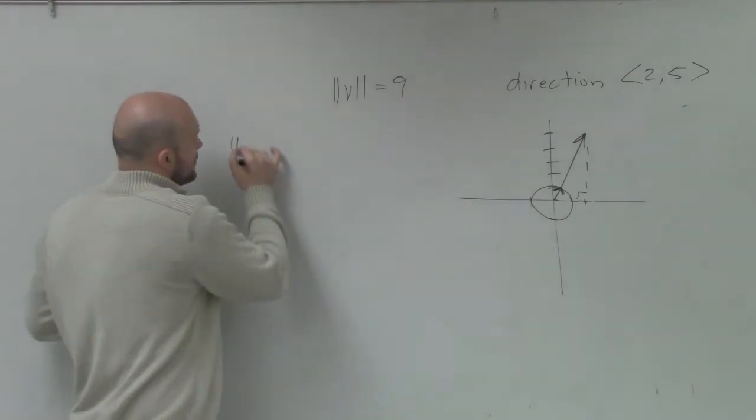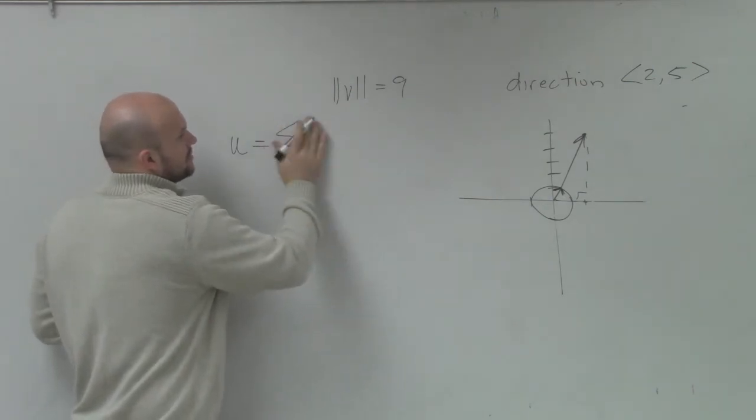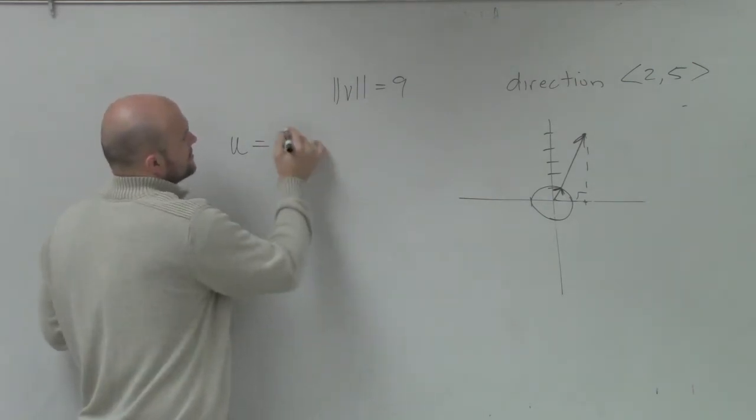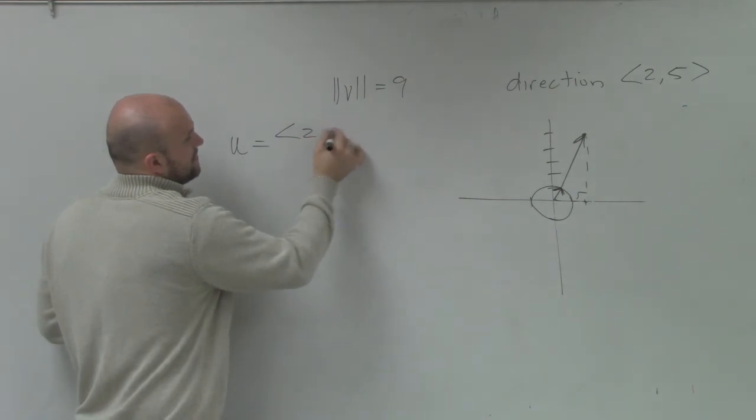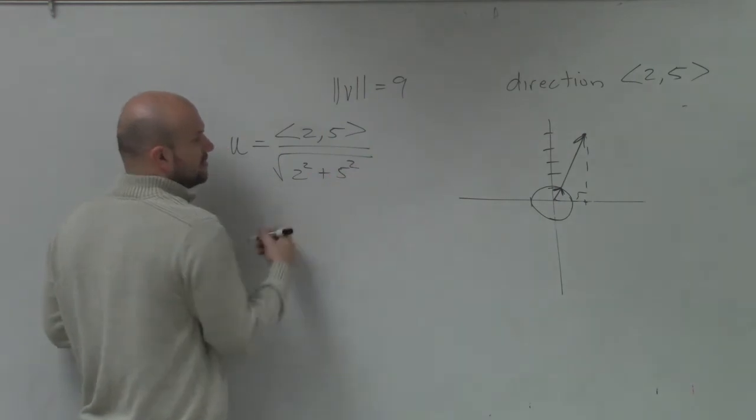So u equals 2 comma 5 divided by the square root of 2 squared plus 5 squared, right?